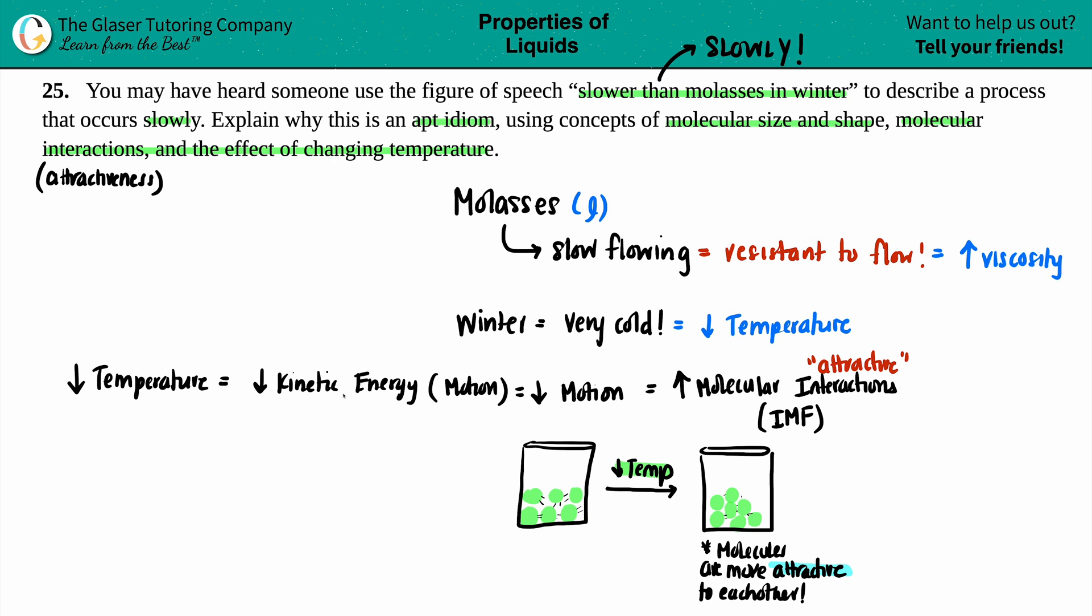And now we just have to bring in molecular size and shape. Now just know that the bigger you are, the more mass you have, the slower moving you are going to be. So if you're dropping the temperature, you're decreasing your kinetic energy, decrease in motion, more molecular interactions. And if you want to just take it as a side note, as just knowing that the bigger, the shape, bigger the shape and size, the more interactions, the more interactions and the slower moving the molecule is.